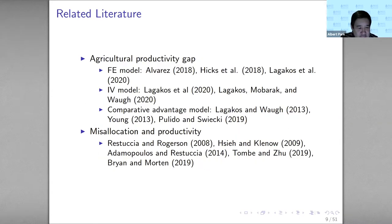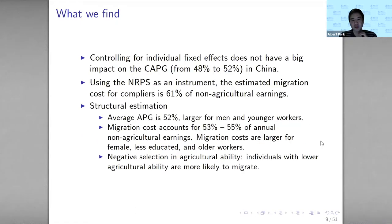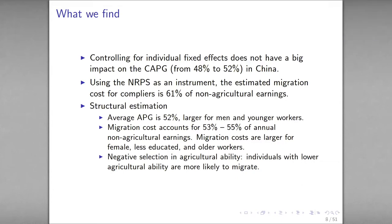These are very large costs estimated for migration — how should we think about these costs? They are not real out-of-pocket costs in the sense of a cash requirement; they include many different types of costs. For example, it could be the cost on education and healthcare due to the hukou system, the psychic cost due to separation from family, or longer working hours in the non-agricultural sector. We consider all of this in the migration cost measure.